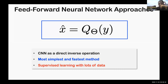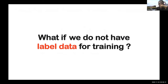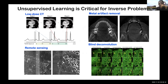The CNN performs a direct inverse operation — this is the simplest and fastest reconstruction method. However, for these supervised learning approaches, we need a lot of training data with matched pairs. But what happens if we do not have any labeled data for training? Can we still train the neural network for the inverse problem? This type of unpaired or unsupervised learning is critical for many inverse problems. For example, in low-dose CT for cardiac imaging, some phases are high-dose and others are low-dose, but we cannot use high-dose phases for training of the low-dose because the heart is moving between phases — so there are no matched pairs.